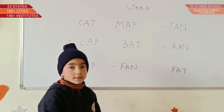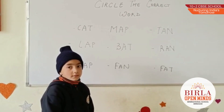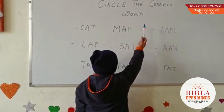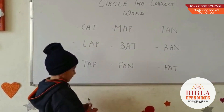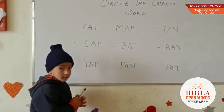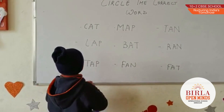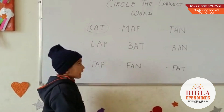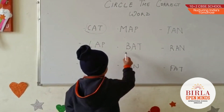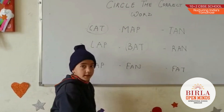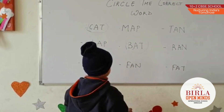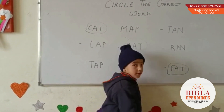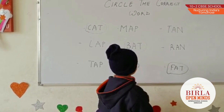Good morning, Aida. What activity are we doing today? Circle the correct word. Okay. Can you circle AT family words? Okay, ma'am. C-A-T. Very good. Next. C-A-T. Very good. Next. F-A-T. Very good. Thank you.